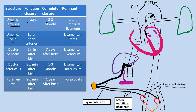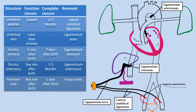Closure of the ductus venosus: functional closure occurs about 5 minutes after birth, and anatomical closure occurs about 7 days after birth. After closure and fibrosis, the ductus venosus becomes the ligamentum venosum. Closure of the ductus arteriosus: functional closure occurs a few minutes after birth, and anatomical closure occurs 1 to 3 months after birth. After closure and fibrosis, it is called the ligamentum arteriosum. Closure of the foramen ovale: functional closure occurs a few minutes after birth, but anatomical closure occurs a few years later.